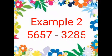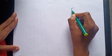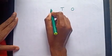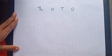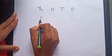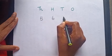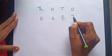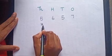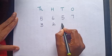Let us see one more example: 5,657 minus 3,285. First, we have to write the place values - ones, tens, hundreds, thousands. And write the given numbers: 5,657 and 3,285.